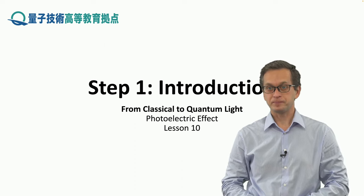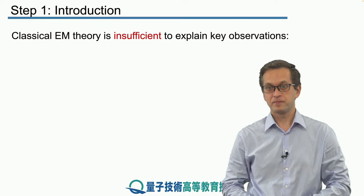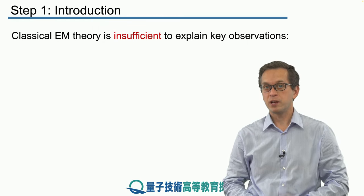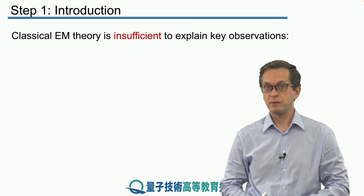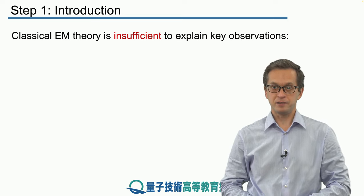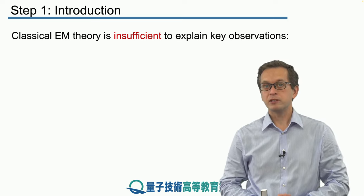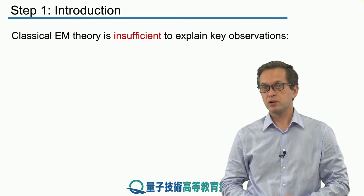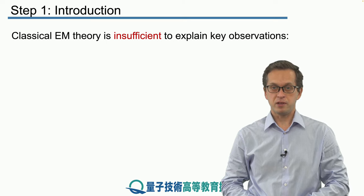So let's begin with step one, introduction. At the end of 19th century there were two main very successful theories: thermodynamics and classical electromagnetism. They completely transformed the lives of people. But there were a few key observations that were not explained by classical EM theory.